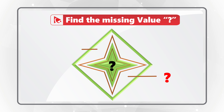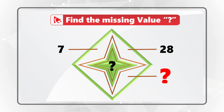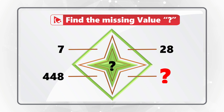Number 7 is at 11 o'clock, number 28 at 1 o'clock, then comes the missing number at 5 o'clock, and there is a number 448 at 8 o'clock. In the center of the combined shape, there is also a missing number represented by the question mark.